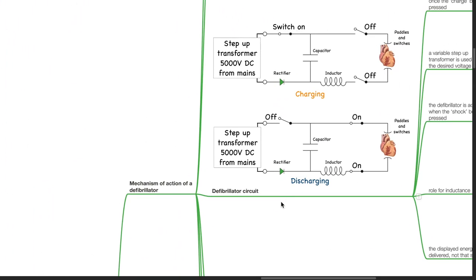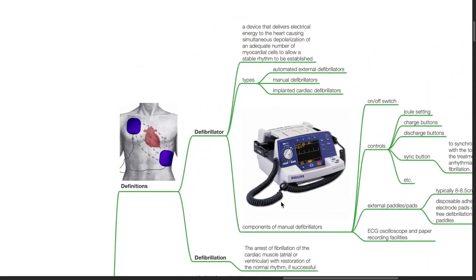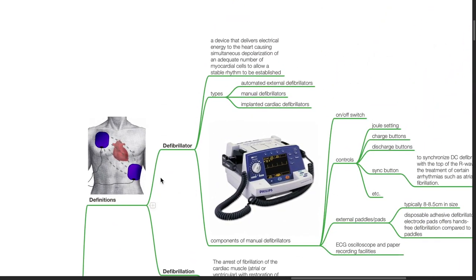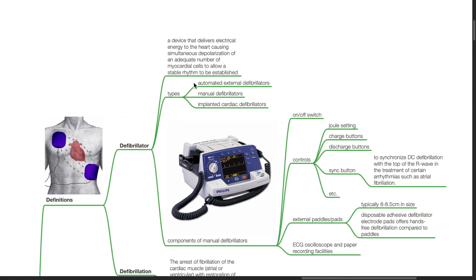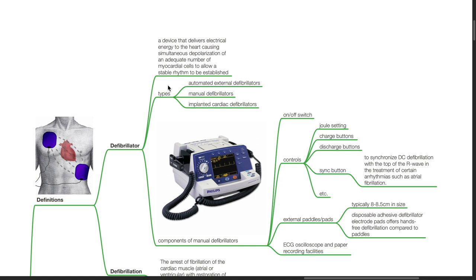Mechanism of Action of a Defibrillator. A defibrillator is a device that delivers electrical energy to the heart, causing simultaneous depolarization of an adequate number of myocardial cells to allow a stable rhythm to be established. Types of defibrillators include automated external defibrillators, manual defibrillators, and implanted cardiac defibrillators.